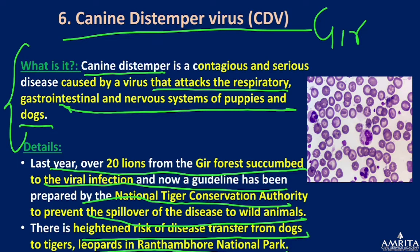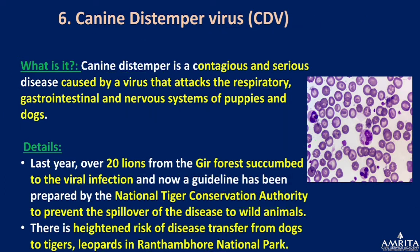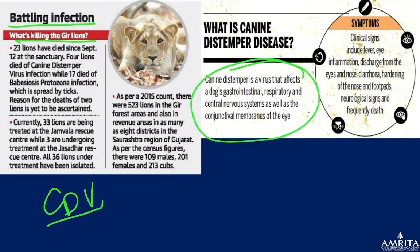There is a heightened risk of disease transfer from dogs to tigers and leopards in Ranthambore National Park. The canine distemper virus affects the gastrointestinal, respiratory, and central nervous system, as well as the conjunctival membrane of the eyes — this is why the topic is important.